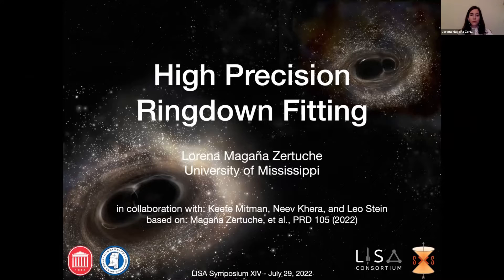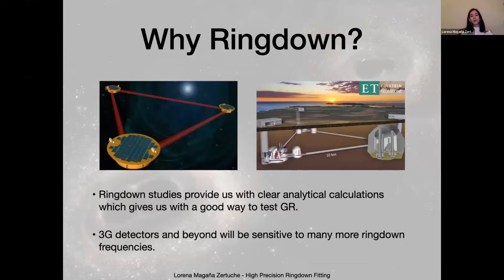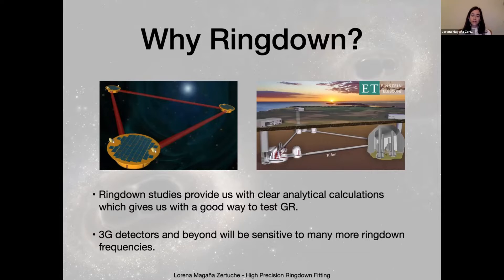Let me begin by asking: why are we interested in ring-down? We're interested in ring-down because it provides us with nice calculations using perturbation theory that can help us understand the remnant properties of a binary black hole system, and it provides us with a nice way to test GR. It also gives us an independent test: for the inspiral, we can find the remnant parameters and with ring-down we can also get an estimate, and we can independently compare the two. That gives us a consistency check between perturbation theory and numerical relativity.